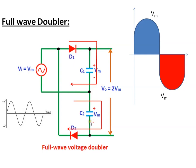The output is taken across these two capacitors C1 and C2, which gives 2Vm — twice the peak voltage of the AC input. An advantage of the full wave doubler is that the voltage rating of each output capacitor is only Vm, whereas in the half wave doubler the output capacitor is rated at 2Vm. Another advantage is that the output voltage ripple frequency is twice the AC input frequency — for example, if the input is 50 Hz, the output ripple is 100 Hz, giving better voltage regulation.